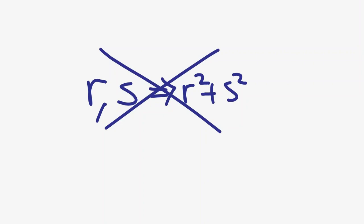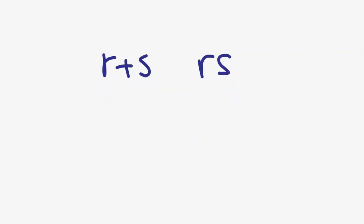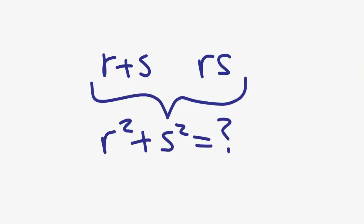Using Vieta's formulas, we can find what r + s and rs are from the quadratic's coefficients. So we can rewrite this problem as: given r + s and rs, how would we find r² + s²?